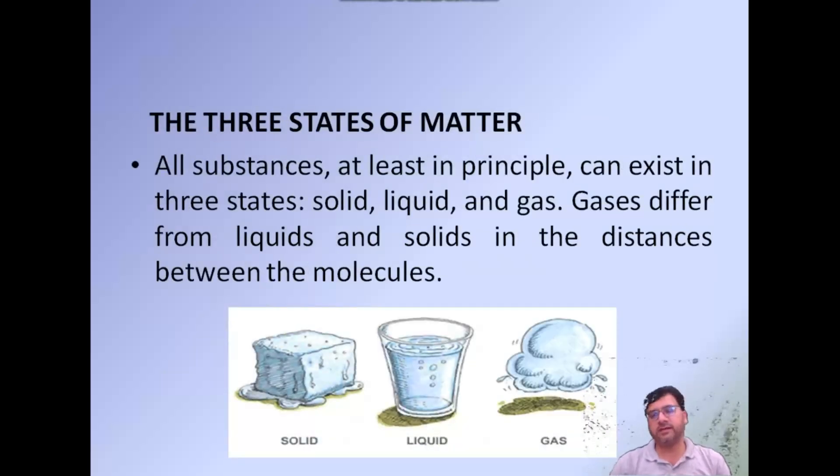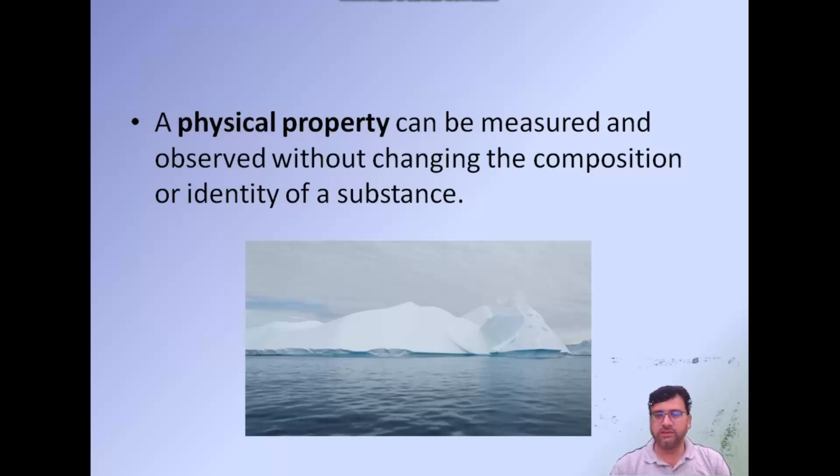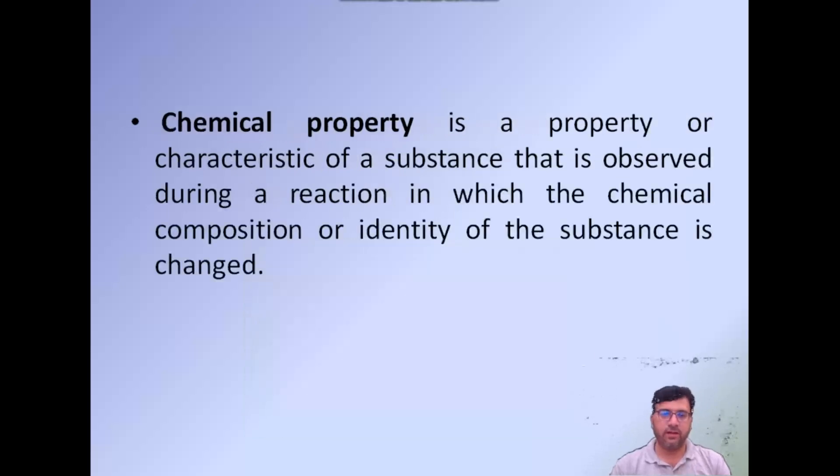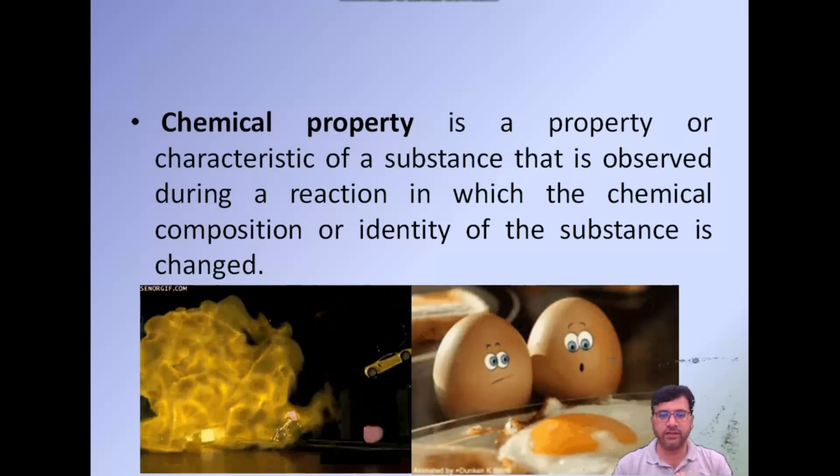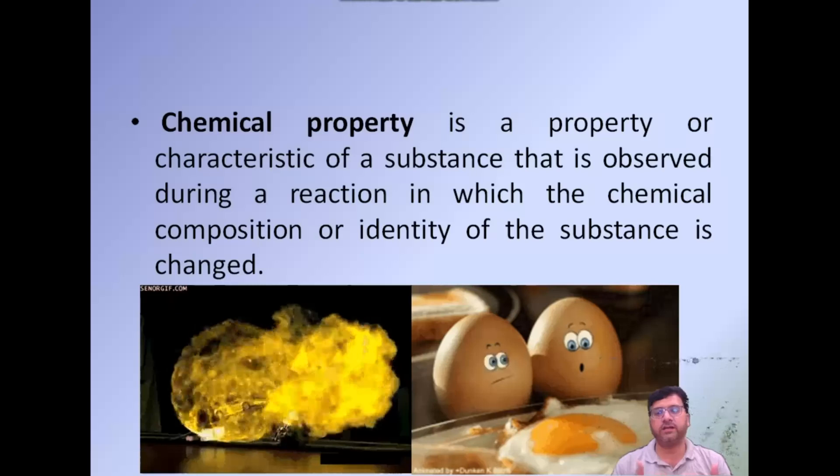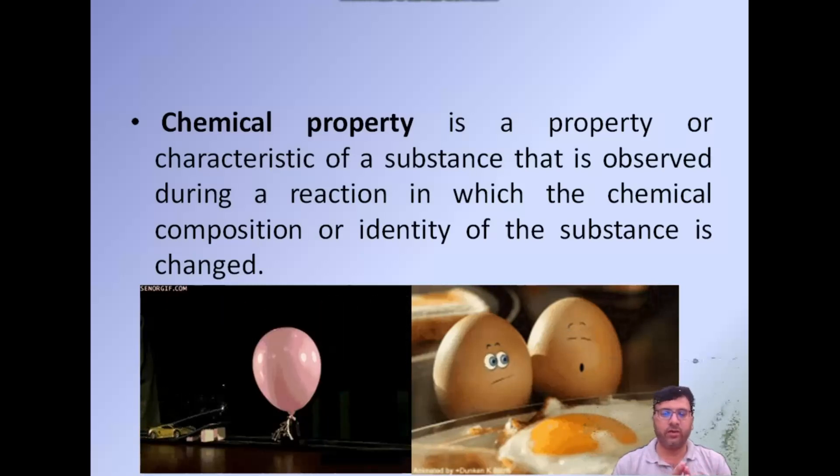State of matters. All substances, at least in principle, can exist in three states: solids, liquids and gas. Substances are identified by their properties as well as by their composition. Physical properties can be measured and observed without changing the chemical composition or identity of a substance, for example melting of ice. Chemical property is a property or characteristic of a substance that is observed during a reaction, in which the chemical composition or identity of the substance is changed, for example combustion, burning or priming effect.